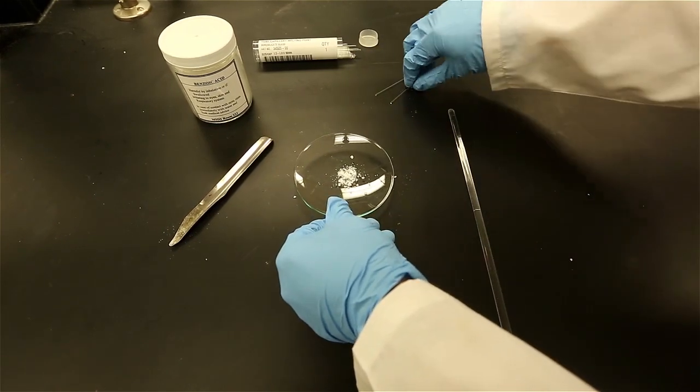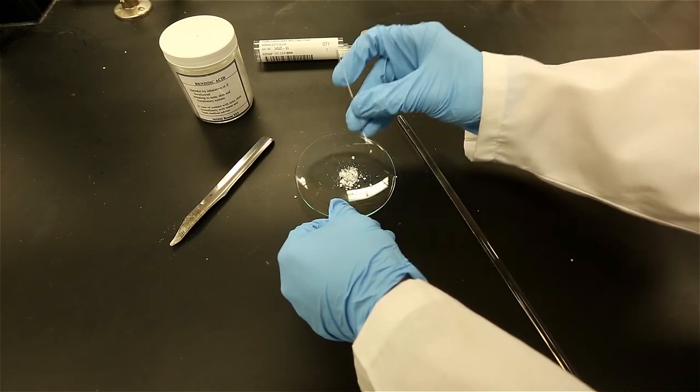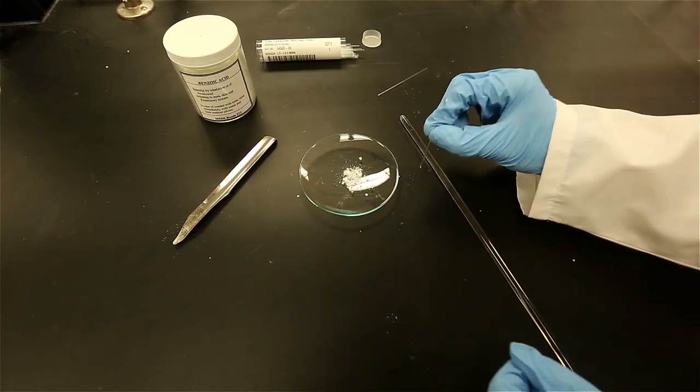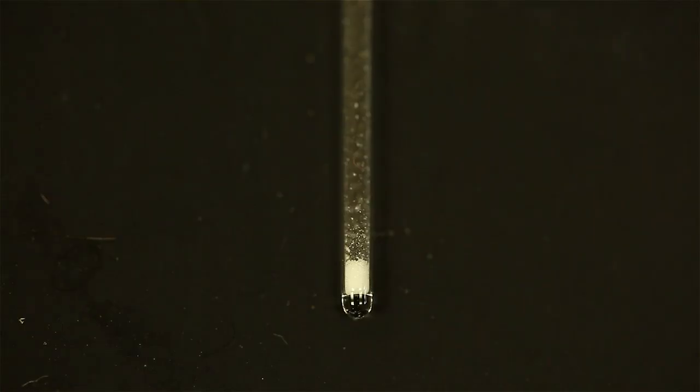Once the sample is relatively fine, use the capillary tube to tap the open end of the tube onto the sample. Once a small amount of sample has entered the tube, tap the closed end against the bench to allow the sample to fall to the bottom. The goal is to fill approximately 1-2mm of sample into the tube.